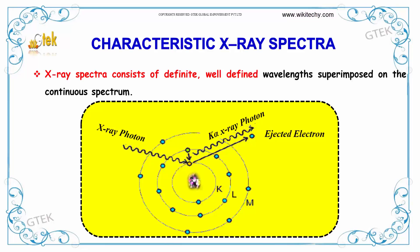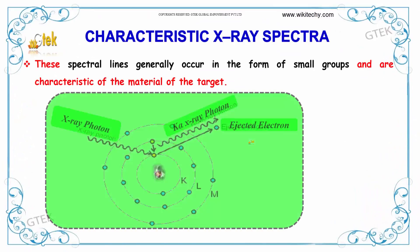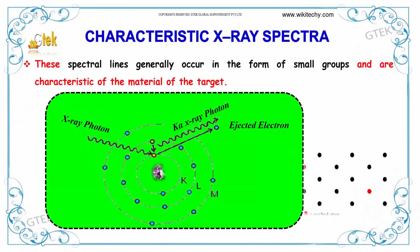Now we will talk about the characteristics of X-ray spectra. The X-ray spectra consist of definite, well-defined wavelengths superimposed on the continuous spectrum. This is your X-ray photon and this is your ejected electron. These spectral lines generally occur in the form of small groups and are characteristics of the material of the target.